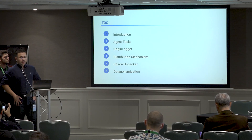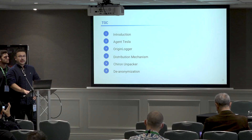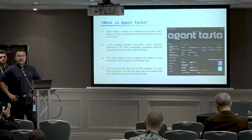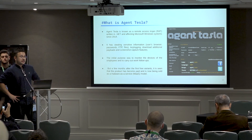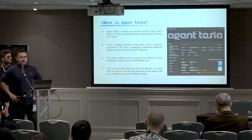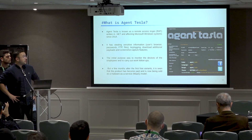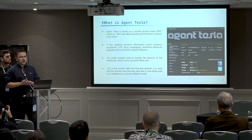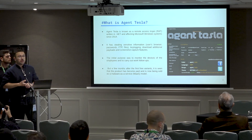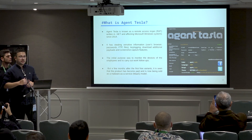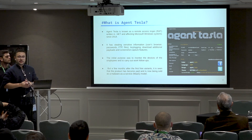Agent Tesla is a remote access trojan and .NET binary targeting Windows systems since 2014. When first released, it became very popular because it was free and very capable at stealing sensitive information from victim computers — like browser passwords, FTP files, and sensitive files on machines. It also has capabilities like downloading additional payloads, key logging, and screenshot capture features.